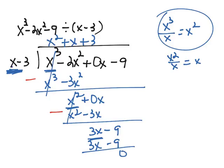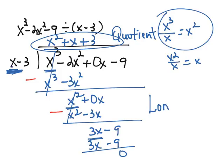When we take x³ - 2x² - 9 and divide it by x - 3, we get the quotient, which is the answer to a division problem: x² + x + 3. That's dividing using the method of long division.